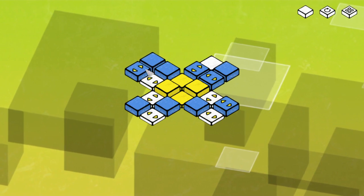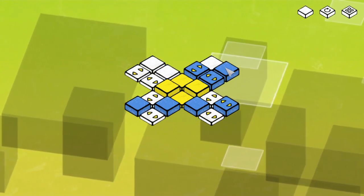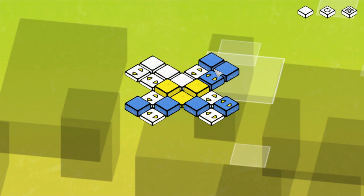The premise is simple, clicking a tile will invert the immediately adjacent tiles. Your goal is to depress all the colored tiles.